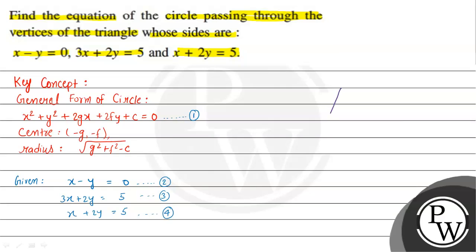Suppose this is the triangle. One side has equation x minus y equal to 0, another side is 3x plus 2y equal to 5, and the third side is x plus 2y equal to 5. The vertices of this triangle are labeled A, B, and C, and the required circle passes through all three vertices.